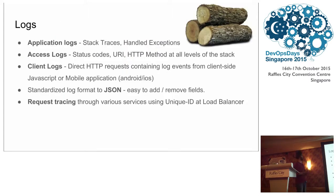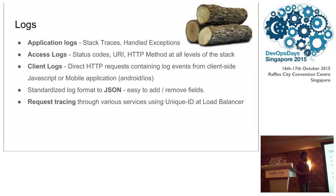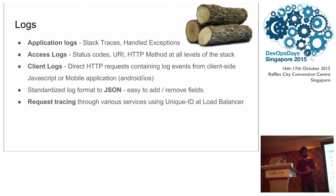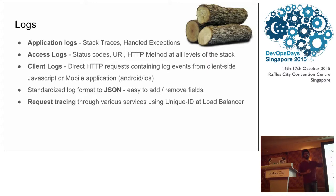These are the log types we currently track at Viki. Starting with application logs — let's say you have a Go application with exceptions; you want to catch all those exceptions and store them somewhere instead of having to go to the server. Stack traces, even handled exceptions, can be logged with different severity levels. For access logs, all our services are configured to log every request they receive in standard JSON, which includes status codes, URL, HTTP method, user agent, IP address, remote IP address, forwarded-for address, and also the unique ID tagged by the load balancer at the top level.